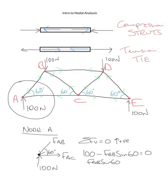Setting the sum of vertical forces equal to zero and rearranging: FAB·sin60 = 100. Dividing both sides by sin60 gives FAB = 115 newtons. We got a positive answer, which means the nature we assumed is correct — the internal forces push towards the node, confirming it's a strut. In an exam, the magnitude is one mark and the nature is another mark.